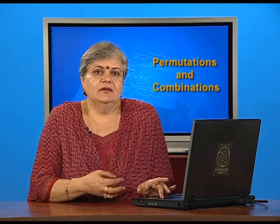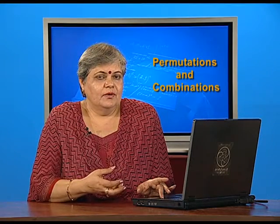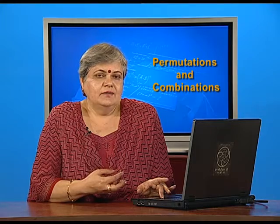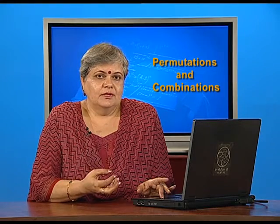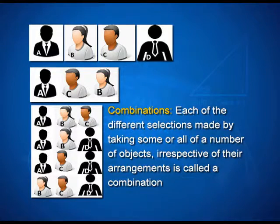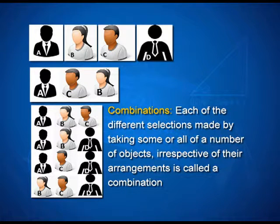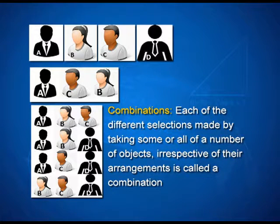The position, the order is not important. Who I have selected is of importance. And so we define combinations as the number of different selections that can be made by taking some or all of a number of objects, irrespective of their arrangements. What we are interested in is finding how many such combinations can be made.